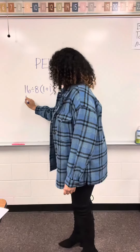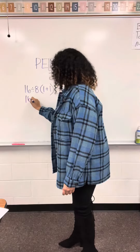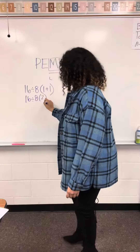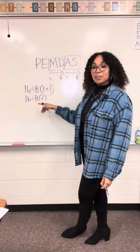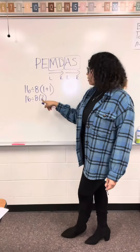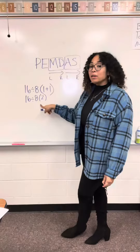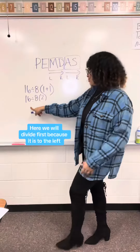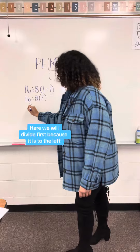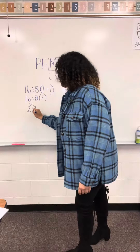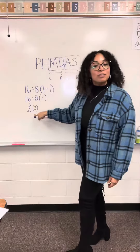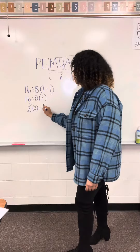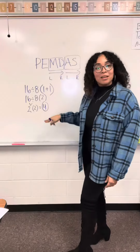Now let's look at this one. We got 16 divided by 8 times 2, because we saw what was in parentheses first. Again, 8 times 2 — that's what that means. And we're not going to multiply first; we're going to divide first because it is to the left. 16 divided by 8, we get 2. And then we do 2 times 2, and we get 4. That is the answer, y'all.